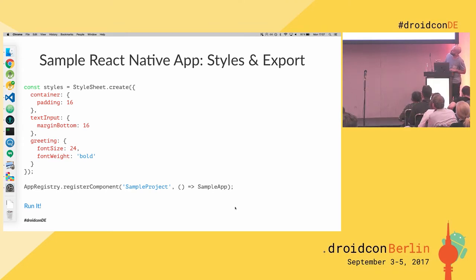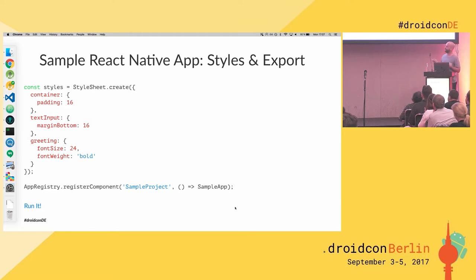Something else to mention: you see these dimensions — these are DPs on Android and pixels in iOS. I know iOS is moving away from pixels, but on Android those are DPs.